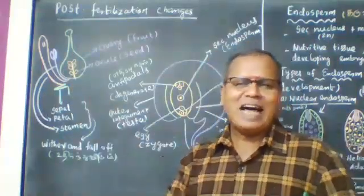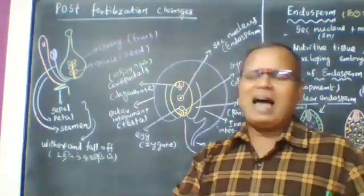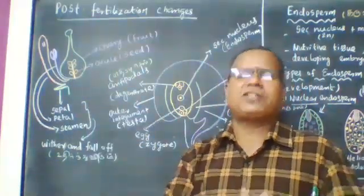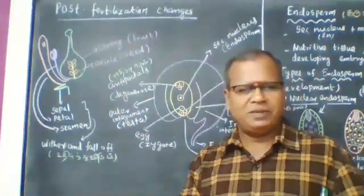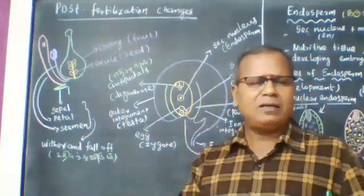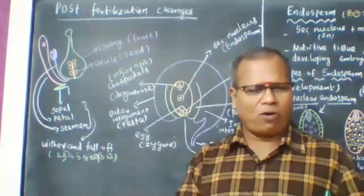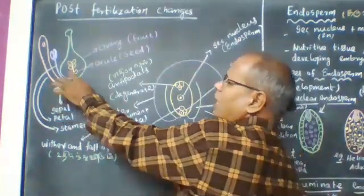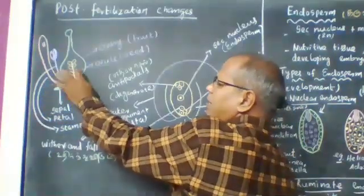A flower is a modified condensed tissue adapted for reproduction, or it is a specialized structure adapted for reproduction. The parts of the flower are: calyx, corolla, androecium, gynoecium, sepal, petal, stamen, and carpel.